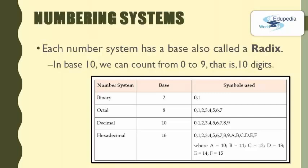For the binary number system it can use only 0 and 1. The octal number system can use numbers between 0 to 7. The decimal number system can use numbers between 0 to 9. For the hexadecimal there is a little difference — it uses both numbers as well as characters from 0 to 9 as well as A to F. A to F represent the numbers 10 to 15.